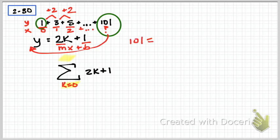So we get 101 equals 2k plus 1, subtract 1 from each side, 100 equals 2k, divide by 2, k equals 50.